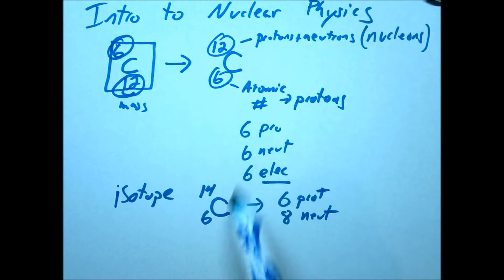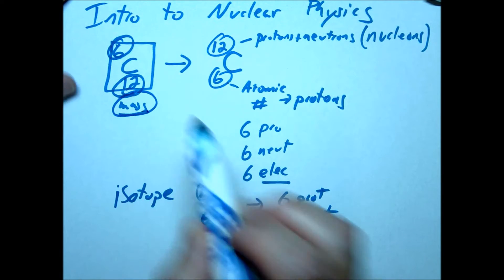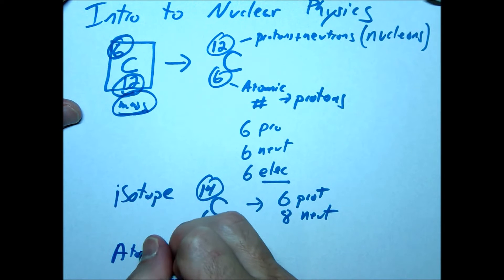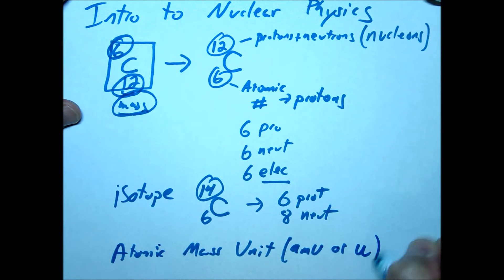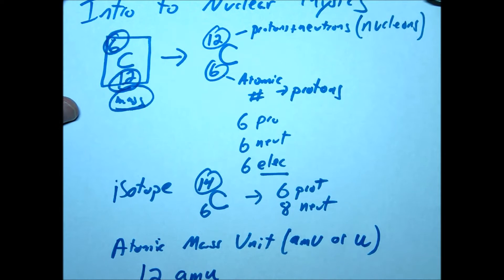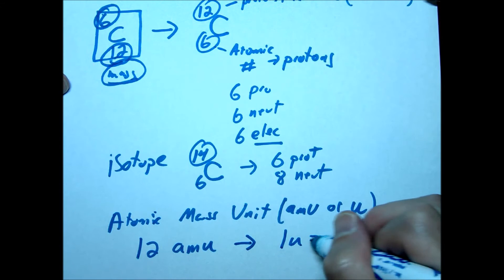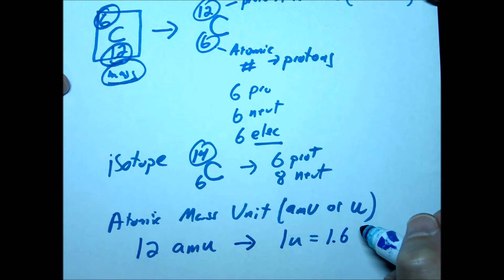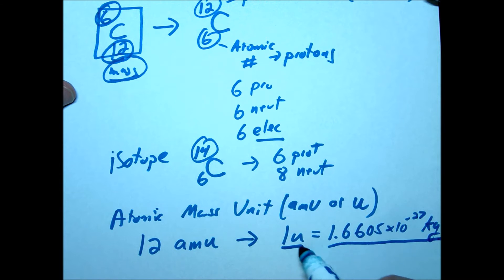Another nice thing about this terminology is that the atomic mass, or the number of nucleons, is also the mass of the atom. So we've invented a new unit called the atomic mass unit, or AMU, sometimes written simply as u. The mass of this carbon atom we would say is 12 AMUs or 12 u's. The conversion to kilograms — a number you should know — is: 1 u is equal to 1.6605 times 10 to the negative 27 kilograms. You're going to need this to make conversions from one mass to the other from time to time.